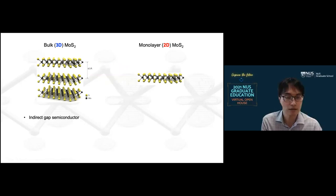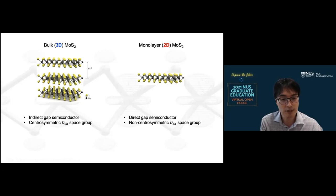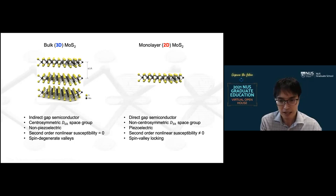And here are some of the examples. Bulk three-dimensional MoS2 is an indirect gap semiconductor, whereas monolayer two-dimensional MoS2 is a direct gap semiconductor. 3D form is a centrosymmetric crystal, whereas 2D form is a non-centrosymmetric crystal. And as a result, one is non-piezoelectric, the other is piezoelectric. One shows a very weak non-linear optical response, whereas the other shows a very strong non-linear optical response, and so on.